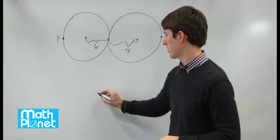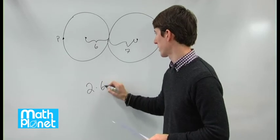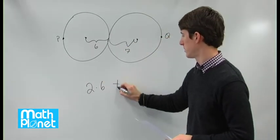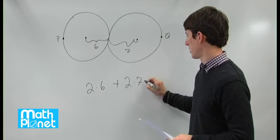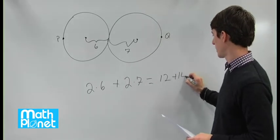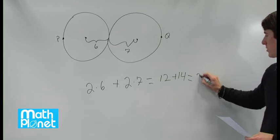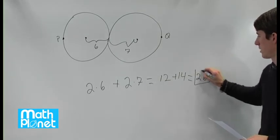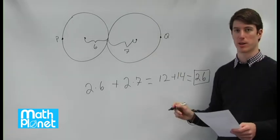The diameter is two times the radius, so we have two times 6 plus the diameter of this one, two times 7, which gives us 12 plus 14, which gives us 26. So the longest distance we can have between P and Q is 26.